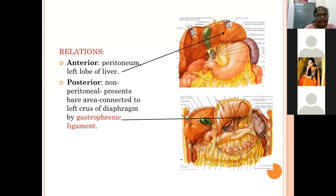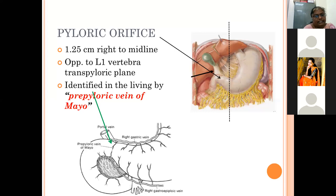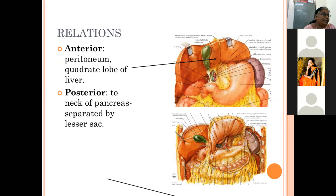The pyloric orifice is the lower constricted part of the stomach continuing with the first part of the duodenum. It is about 1.25 centimeters to the right of the midline, opposite to the first lumbar vertebra, at the level of the transpyloric plane. In living individuals, especially obese persons, the pyloric orifice can be identified by tracing the pre-pyloric vein of Mayo, which is an unpaired vein not accompanied by an artery.